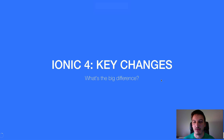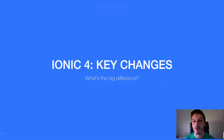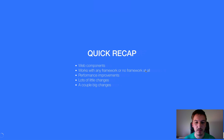Hey everybody, now that Ionic 4 is officially out, I just wanted to do a quick recap video covering the key changes you'll find in Ionic 4. I'm not intending this to be a migration guide or anything like that. There's a lot of small things that have changed in Ionic 4, but a lot of the stuff is mostly the same, so I just want to focus on what I think are the two big things that have changed.